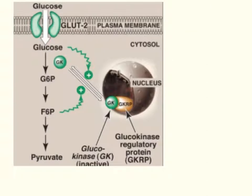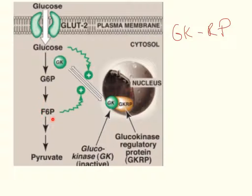Glucokinase can actually be sequestered in the nucleus — I covered this in the last video on futile cycles in the cell. This is done by a protein called glucokinase regulatory protein. Whenever concentrations of fructose 6-phosphate are high, the regulatory protein will shuttle glucokinase into the nucleus and sequester it, and that will allow for gluconeogenesis.